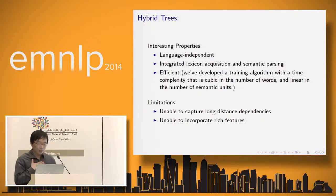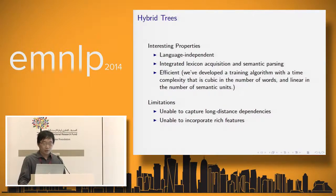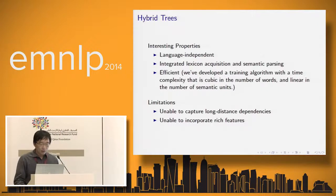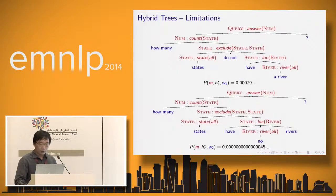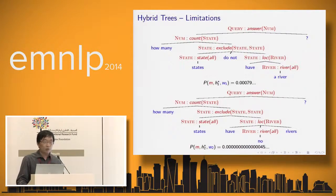As a generative model, the hybrid tree framework also comes with some limitations. First, it is unable to capture some long-distance dependencies because of the strong independence assumptions made in the generative process. Second, it is unable to incorporate features as a generative model. To help understand these limitations better, here we have an example, assuming we have already learned a hybrid tree model.